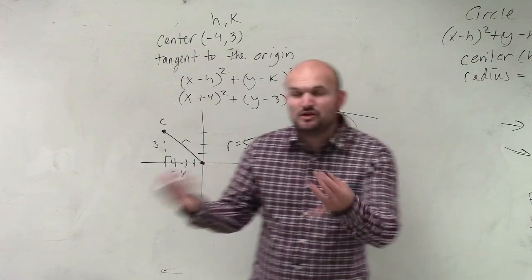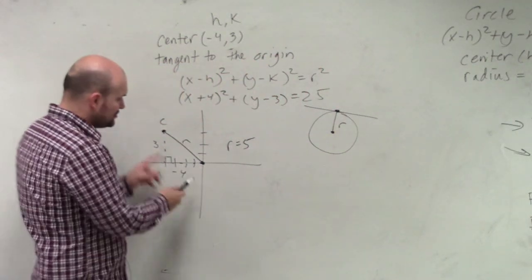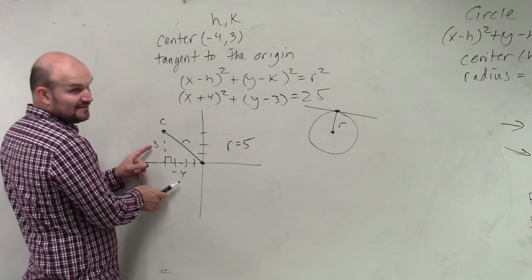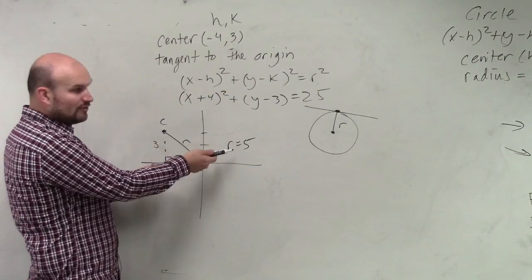So you would have to know your Pythagorean triple. If you don't know your Pythagorean triple, that's fine. Do the Pythagorean theorem. 3 squared plus negative 4 squared is 25 squared. Square root of that is going to equal 5.